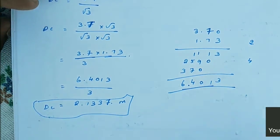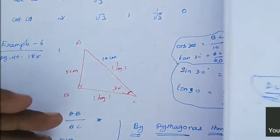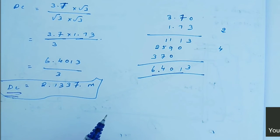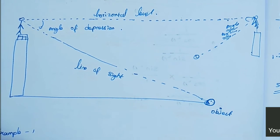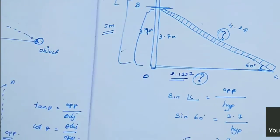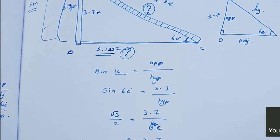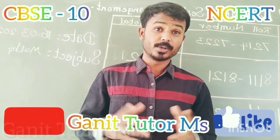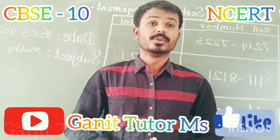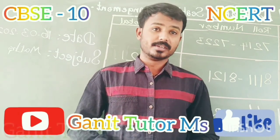So now we found DC as well — the DC value is 2.1337 meters. I hope in this video you are clear about the problem. Thank you for watching my video. If you have any doubt, you can ask me in the comments. Thank you.